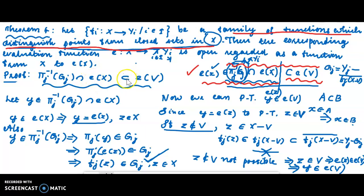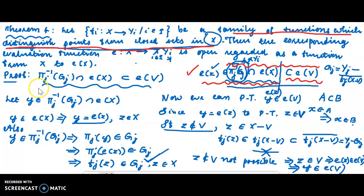The left side set contains all points, so this subset is valid. X element of pi_j inverse of G_j intersection E(X) is a neighborhood of each of its points, and so E of V is open. E is regarded as a function from X to E(X): E of V is a neighborhood of the open set in the relative topology of E(X). So when we regard E as a function from X to E(X), E is an open function — images of open sets are open. V open in X implies E of V open in E(X) in the relative topology.